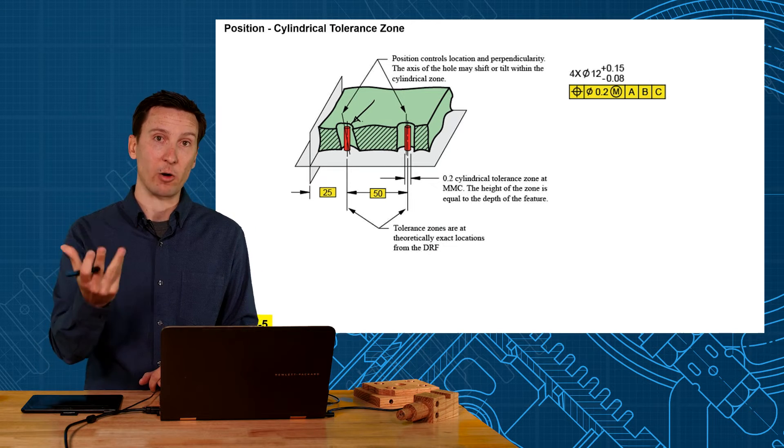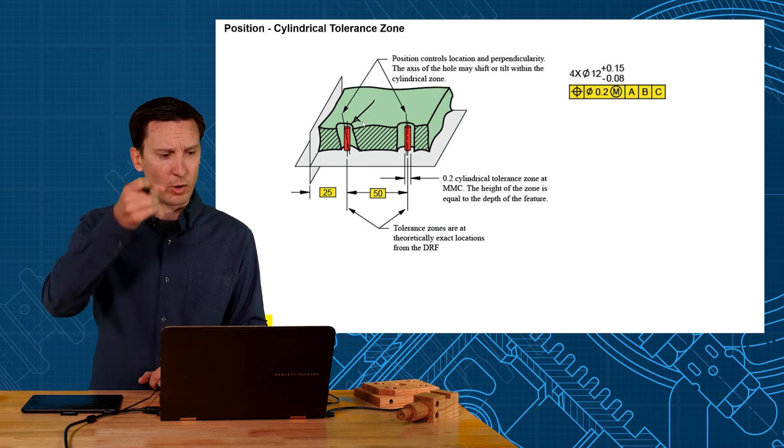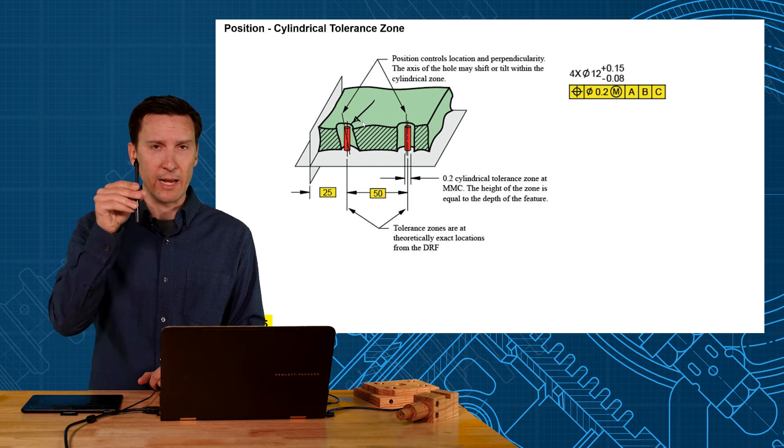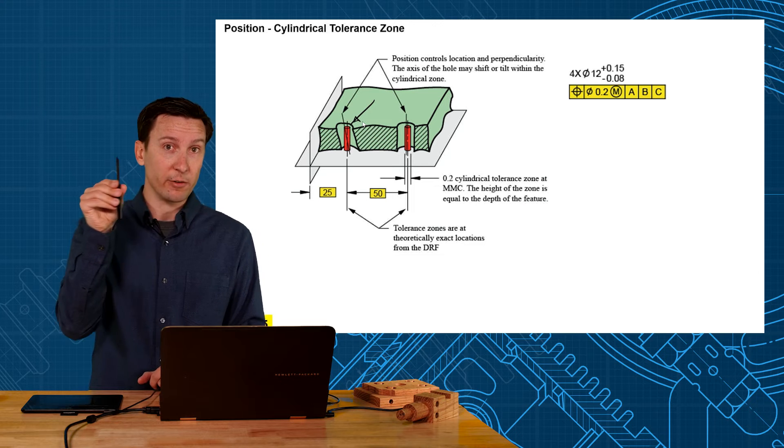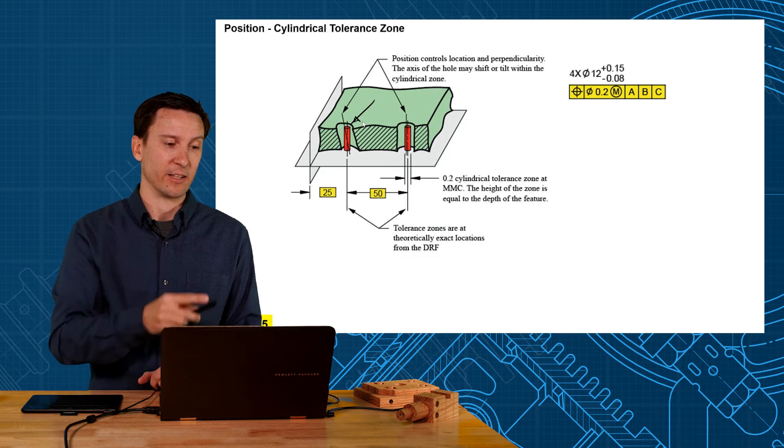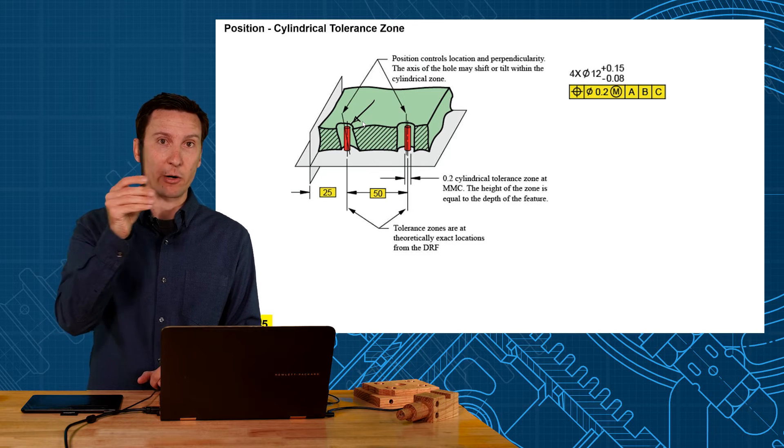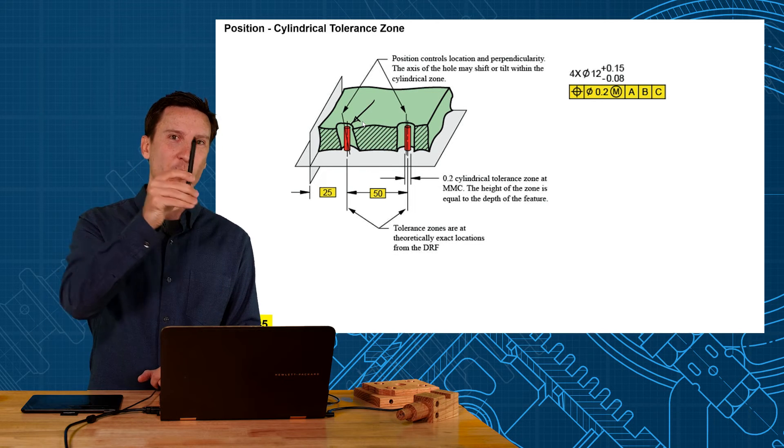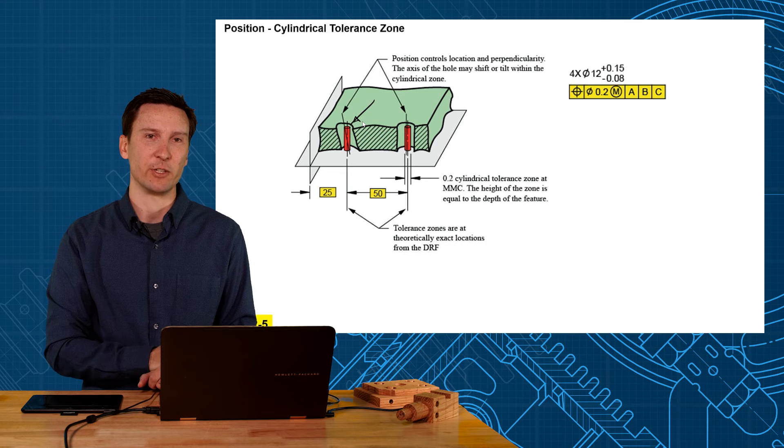A good way to explain that here is if I take a cross section you can see these cylindrical tolerance zones a little better. This is a picture that I also had in unit 3 where I have a cylindrical shaped tolerance zone and now the axis can either shift like it is in that right hole or it can tilt as it is in that left hole. So position is not only controlling location but it also controls the orientation on that feature as well.